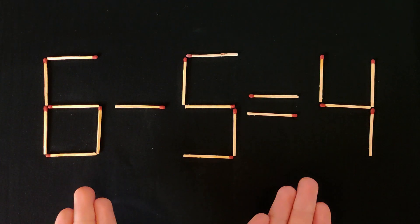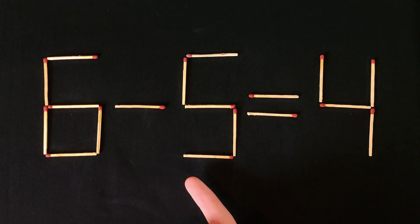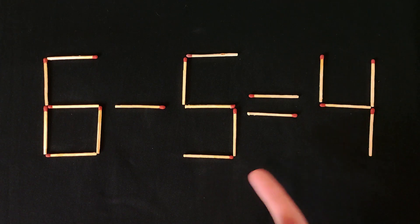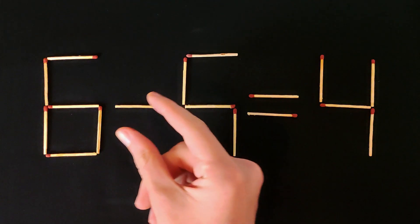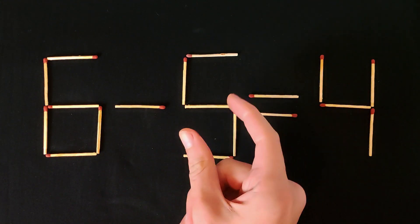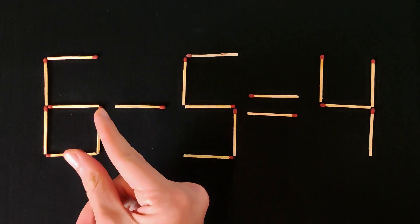Hi guys, today we have a puzzle like this: 6-5 equals 4. That's wrong. All we need to do is rearrange only one matchstick so that this equation is correct. I think it's clear for you.